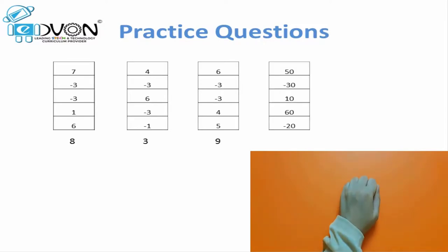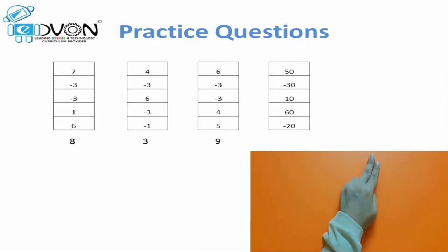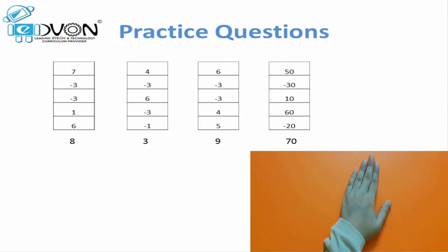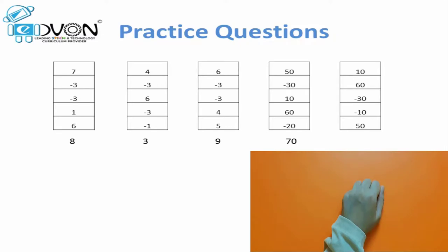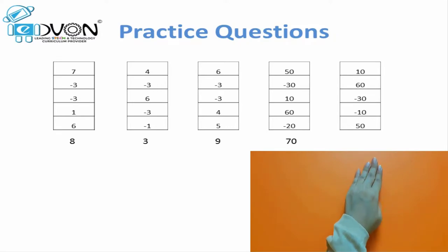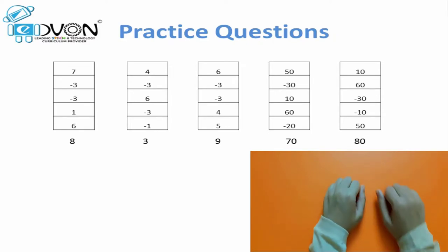Next question is for tens, so we will apply on the left hand. 50, minus 30, plus 10, plus 60, minus 20 — answer 70. Next question: 10, plus 60, minus 30, minus 10, plus 50 — answer 80.